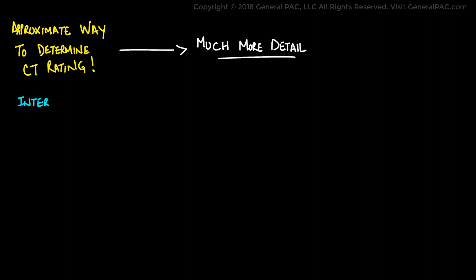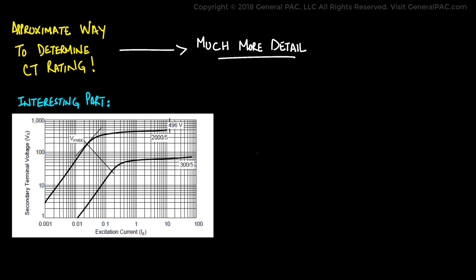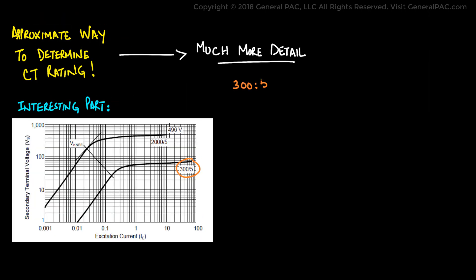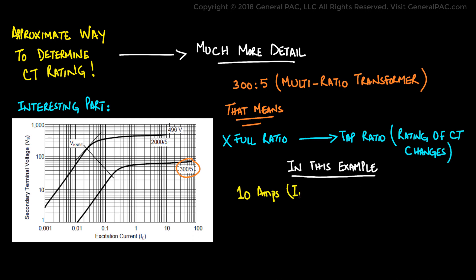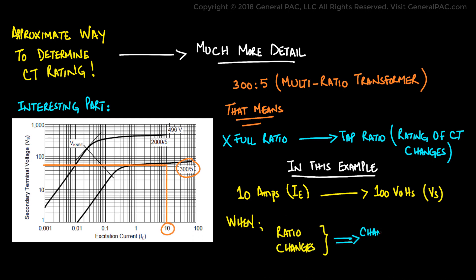The second curve, ratioed at 300-to-5, is part of the multi-ratio current transformer. If we are looking at a ratio that is not the full ratio — meaning it's a tapped ratio — then the rating of the current transformer changes. In this example, at 10 amps exciting current, the voltage is definitely less than 100 volts. So as we change the ratio, we also change the CT rating quite considerably — keep that in mind.